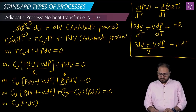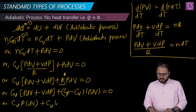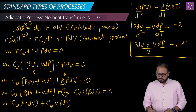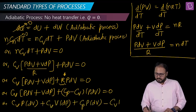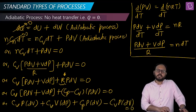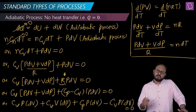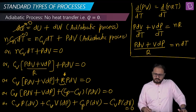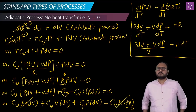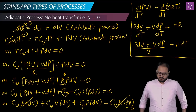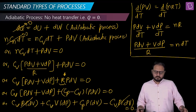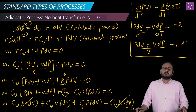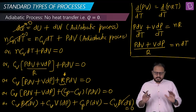Expanding everything, keeping the differentials in brackets: Cv·(P·dV) + Cv·(V·dP) + Cp·(P·dV) - Cv·(P·dV) = 0. Good news — the first and last terms cancel out.